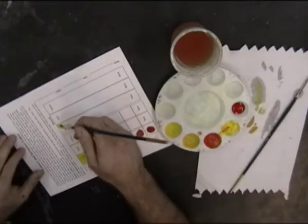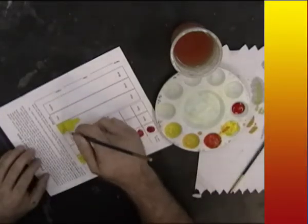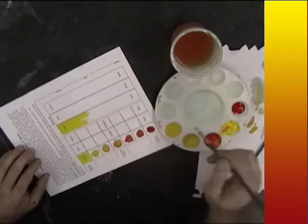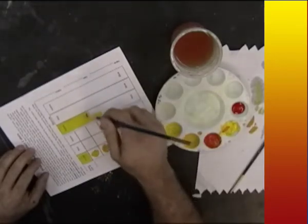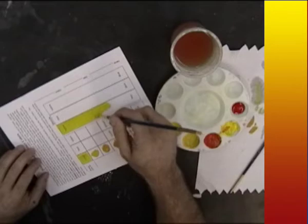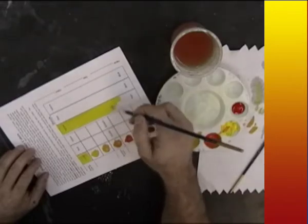This gets tricky because you want to be neat, but also be fairly quick. You don't want to be so fast that you're being sloppy, but you don't want to be so slow that the paint winds up drying and you're not able to blend the yellow and the red paints together.